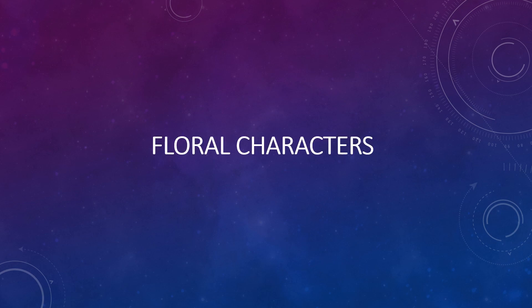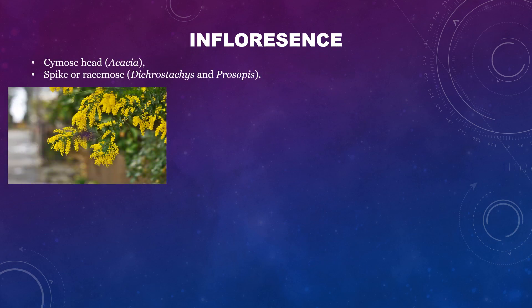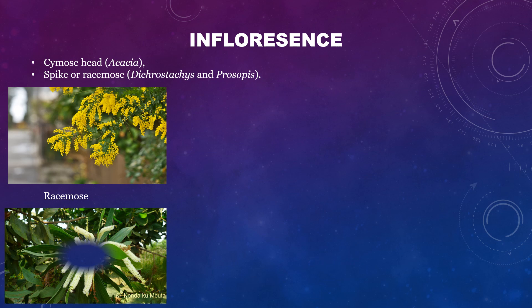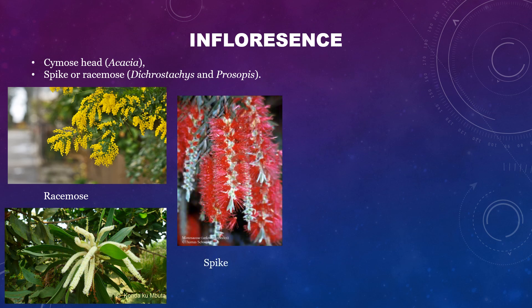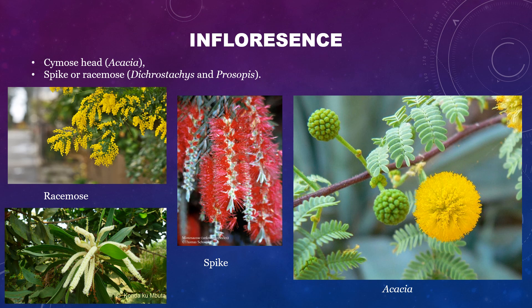The floral characters: they usually have spike or racemose inflorescence like in Prosopis. They can also have cymose head inflorescence like in Acacia nilotica. In Acacia nilotica, this shows a head-like globose inflorescence — a head-like, cushion-like inflorescence very common in our country.